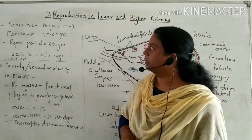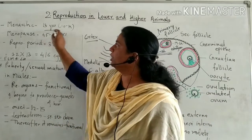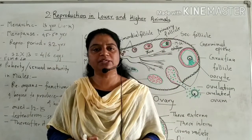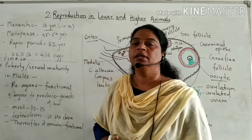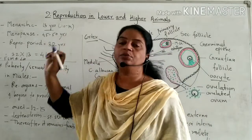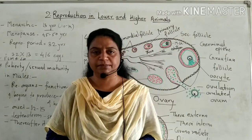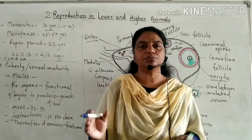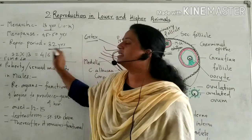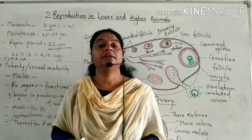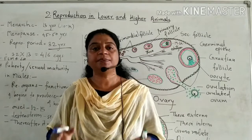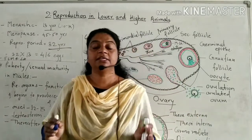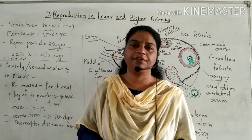The first menstrual cycle occurs at the age of 13, called menarche. The last or stopping of the menstrual cycle occurs between the ages of 45 to 55 years, called menopause. The period between menarche and menopause is the 32-year reproductive period, during which a maximum of about 416 eggs are produced by a female.